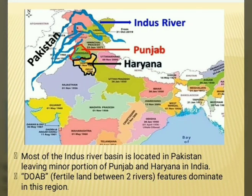Punjab's name comes from two words: Panj and Ab. Panj means five, Ab means river. Punjab means a place of five rivers.